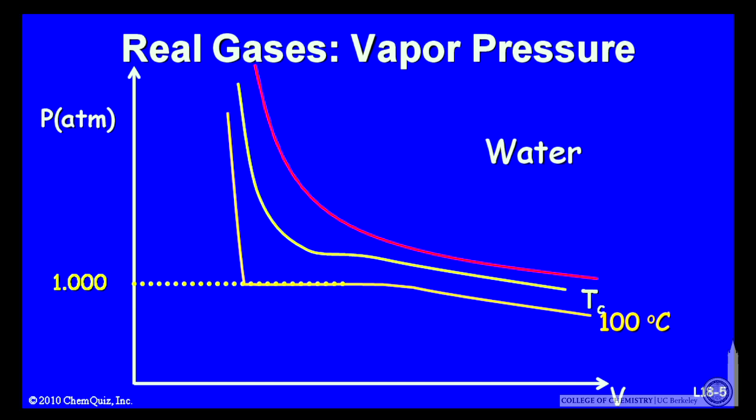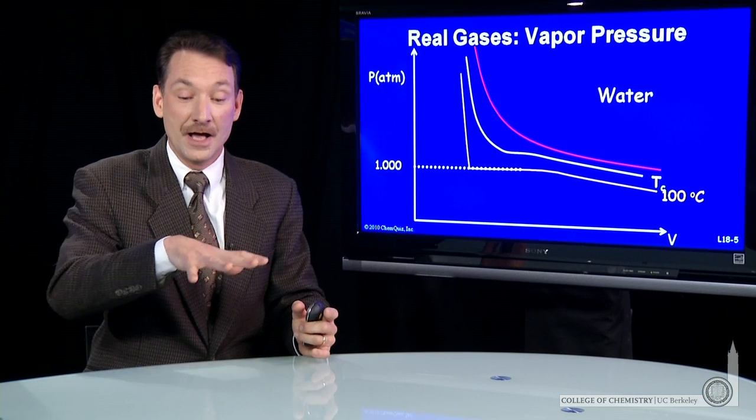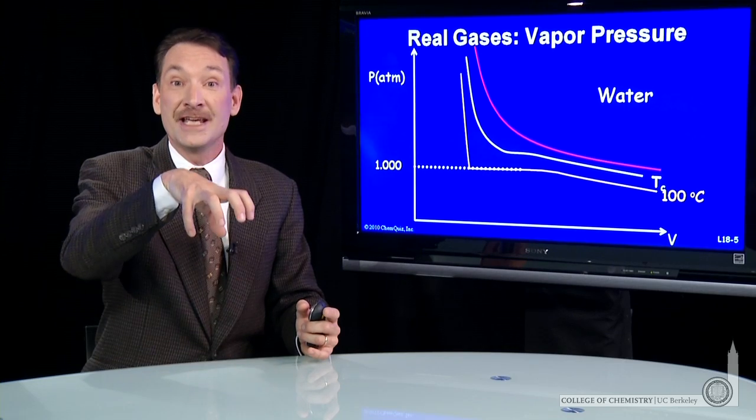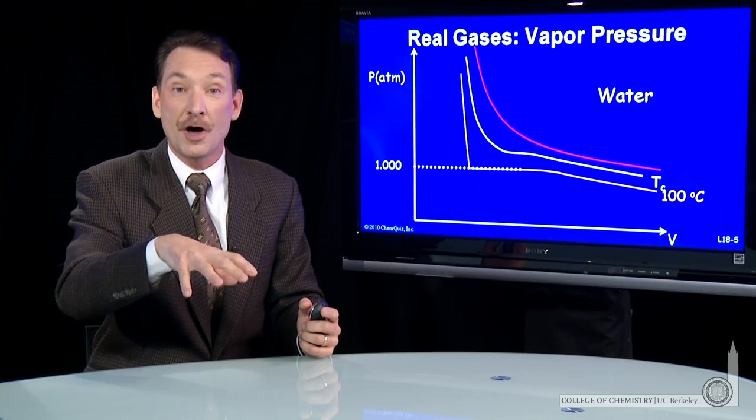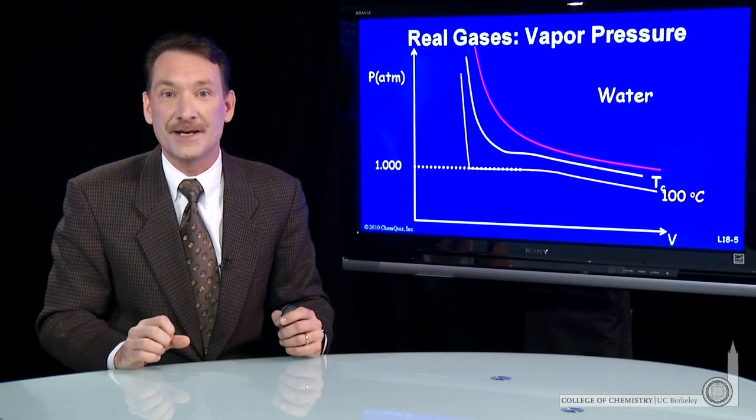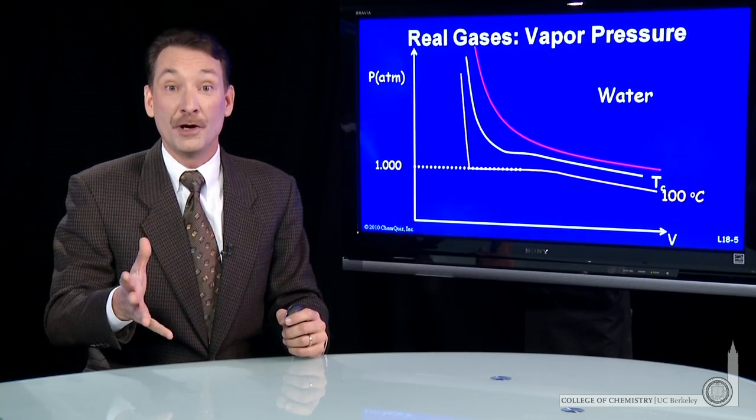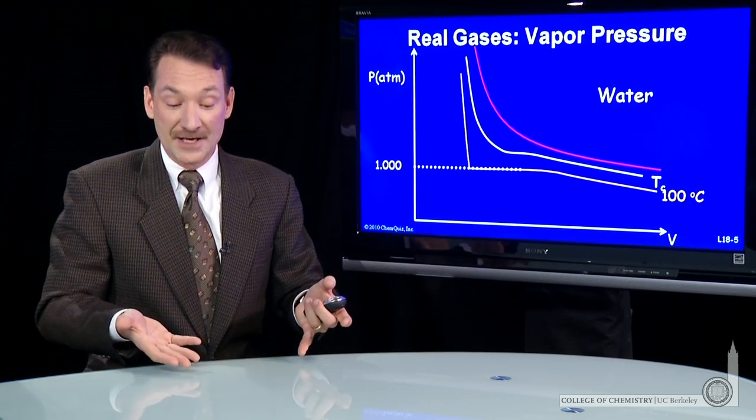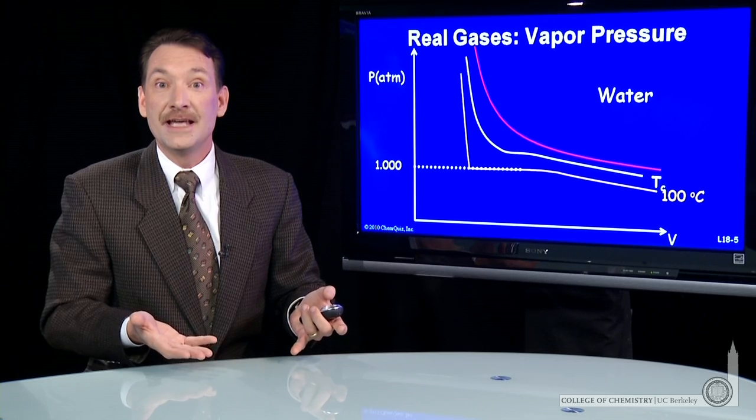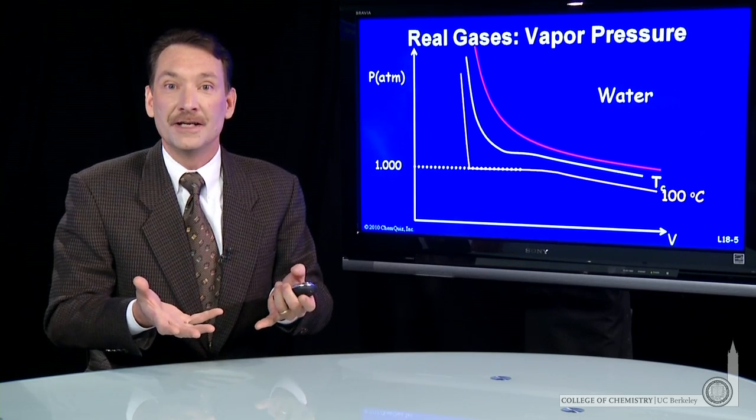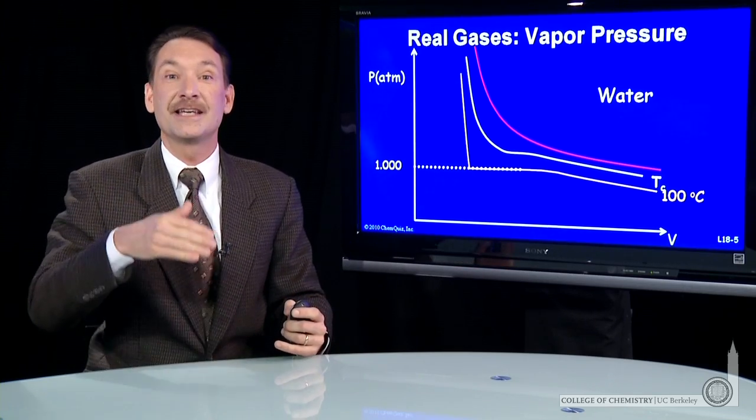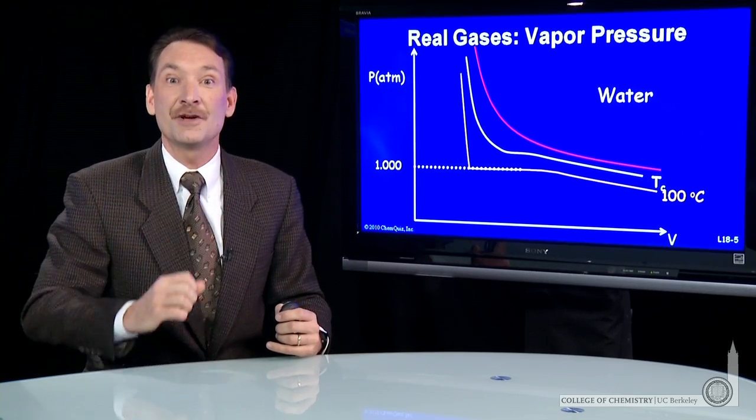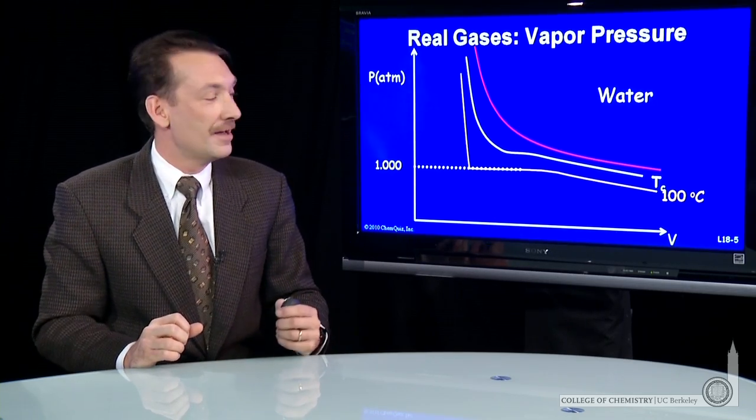We call this the vapor pressure of water for that temperature. It's the pressure of liquid water exerting into the gas phase, so it's the partial pressure of the gas phase water above the liquid for that temperature. The normal boiling point is defined as where the vapor pressure equals atmospheric pressure. It's where the vapor pressure can push back the atmosphere and the liquid to gas spontaneous transition can occur.